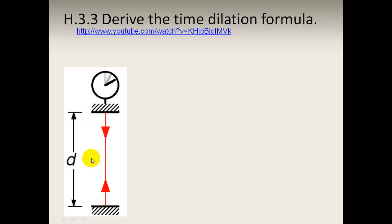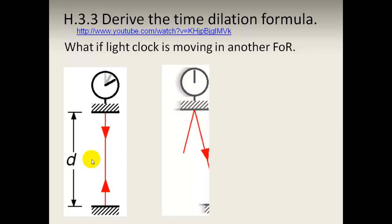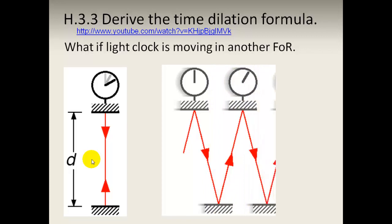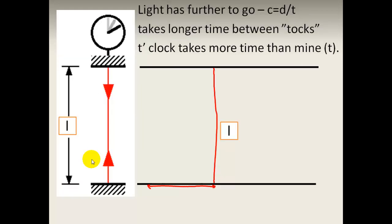This is in our frame of reference. What happens if this light clock is moving in another frame of reference, or another person is looking at it moving in our frame of reference? The distance travelled by light is going to be further, and if it's further it must take more time, because the speed must be the same — everybody must measure the speed being the same.